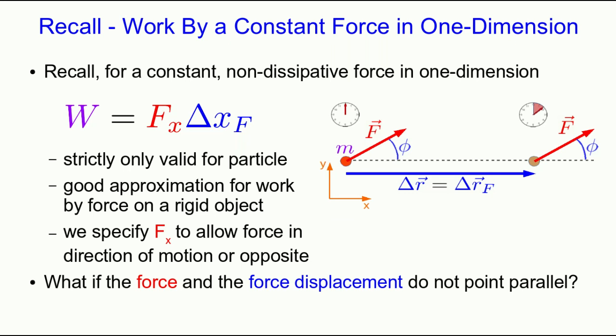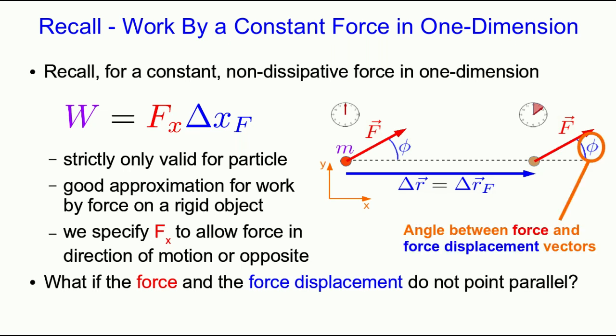But what if the force and the force displacement do not point parallel? Then how do we calculate the work by this force? Let's think about the case where an object moves through some displacement delta r — the same as the force displacement vector delta r_f — and there's a force oriented at an angle phi relative to the force displacement vector.